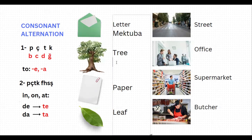Here we have another word — 'tree,' which is 'ağaç' in Turkish. If you want to say 'to the tree,' then it is going to be 'ağaç-a.' But again, this word is ending with one of peçeteğe, so this ç will alternate to c, and it will be 'ağaca.' So 'to the tree' is 'ağaca' in Turkish.